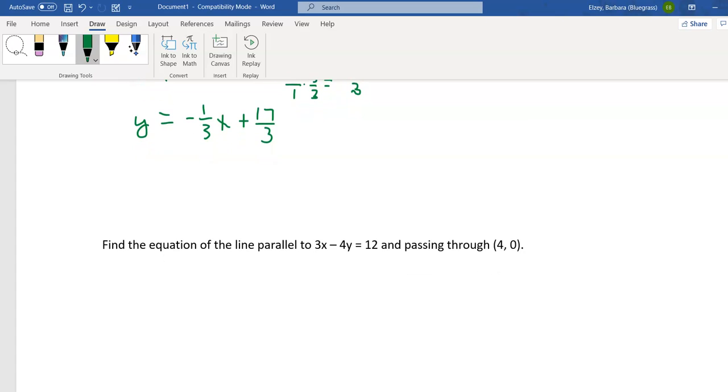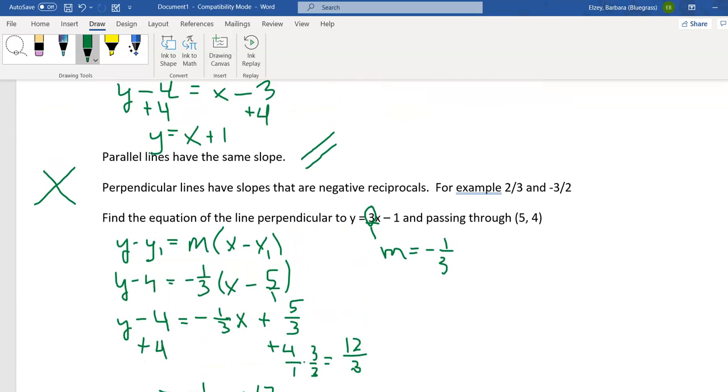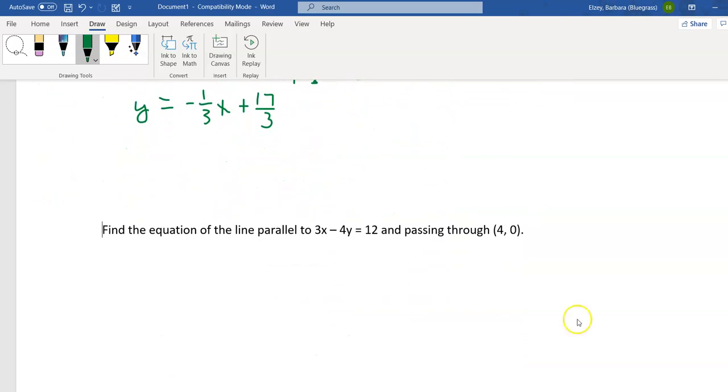Now let's look at this last one. Find the equation of the line parallel to 3x minus 4y equals 12 and passing through (4, 0). Let's remember that parallel lines have the same slope, but this line is not in slope-intercept form. We cannot pick off the slope at present. So what we've got to do is put it in slope-intercept form first, solve it for y, and then we can see what its slope is.